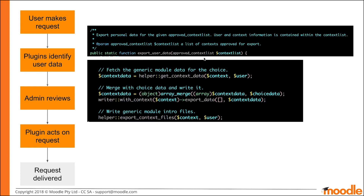The approved context list includes the number of contexts and which contexts have been included in the request. The approved context list class includes a number of helper functions to help you to iterate over those contexts, and it also includes helper functions for the user record for the user who made the request. In the case of subject access requests where data is exported, the ExportUserData function will be run as the user who made the request. You must export any relevant data that you hold for each of the supplied contexts in the list.